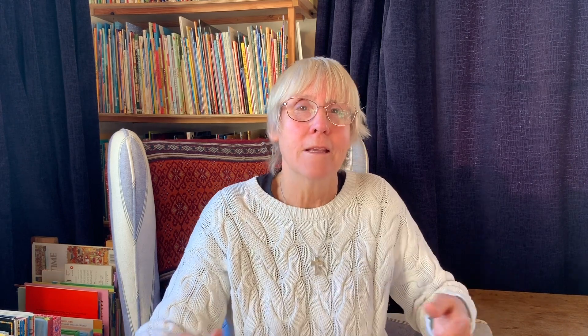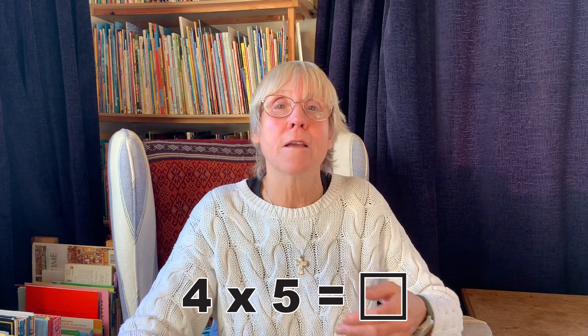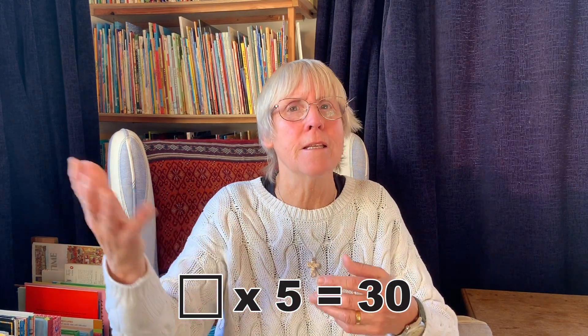Once that's all locked in place and robust, we can build in division — because all division is, is posing the question in a different way. Instead of saying 'what are 4 lots of 5?', I say 'how many 5s do I need to get to 30?' — 5, 10, 15, 20, 25, 30 — I need 6 lots of 5. I'm just putting the question mark in a different place: how many 5s give me 20? How many 5s give me 30? Children start to see that division is just another way of answering a question about multiplication. It's win-win.